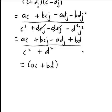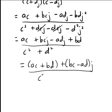While the imaginary part of the complex number is of the form bc minus ad, so that's all multiplied by j and still all divided by c squared plus d squared.